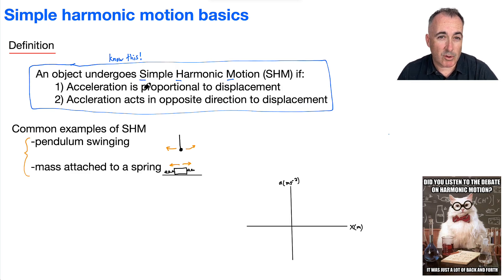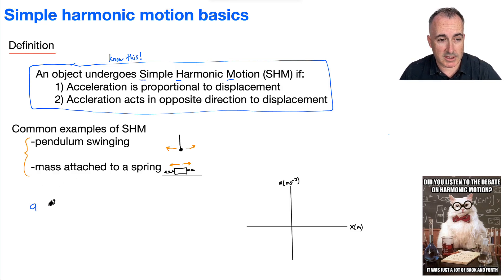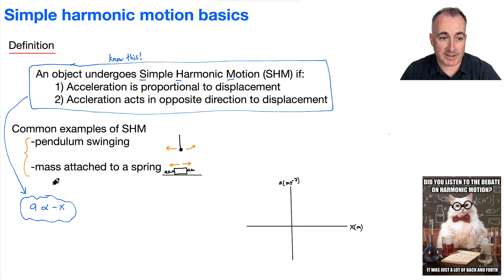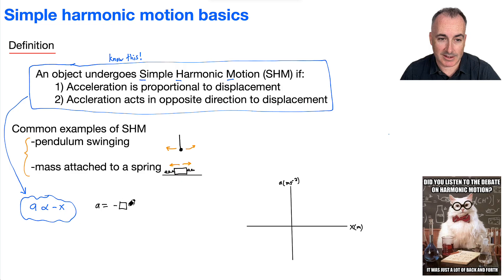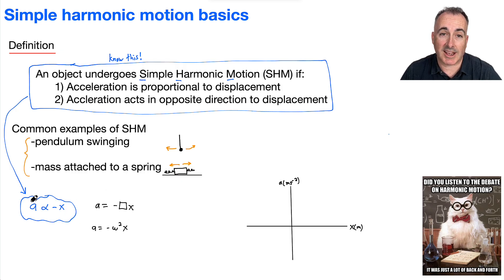We can summarize this with an important equation. When I think about simple harmonic motion, I think about this: acceleration is proportional to negative x. The 'a proportional to x' part captures the proportionality, and the negative captures the opposite direction. This means there exists an equation a = −ω²x. The key thing is just that a is proportional to minus x.